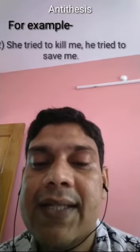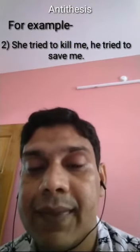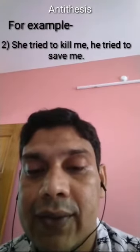Another example: 'She tried to kill me, he tried to save me.' Here also, two contradictory ideas — save and kill — these two contradictory verbs have been used in two different clauses. 'She tried to kill me, he tried to save me.' So this is also an example of antithesis.